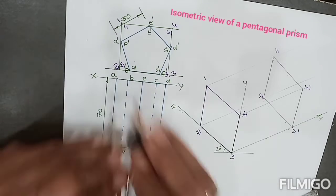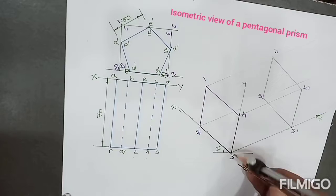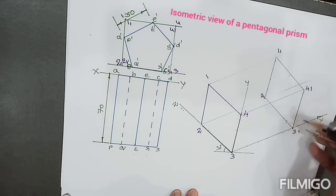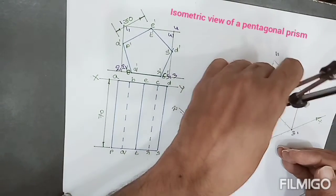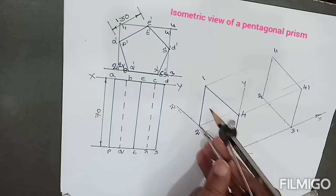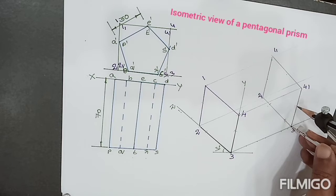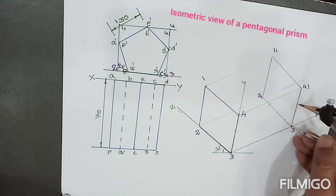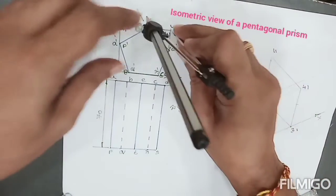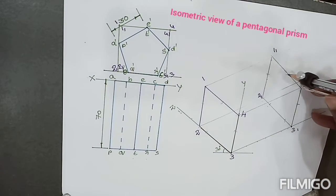Then 2B as radius, 2 as center, draw arc. Similarly 3C also is the same radius. 2 prime Q prime also is the same radius. Next, 2A as radius, 2 as center. Similarly 3D also is the same radius. Then 4E and 4 prime T.